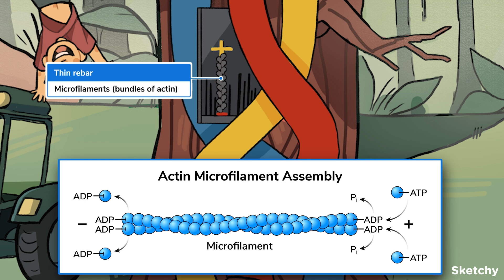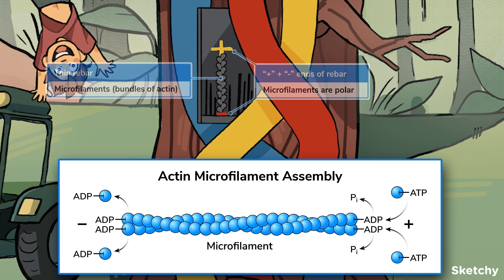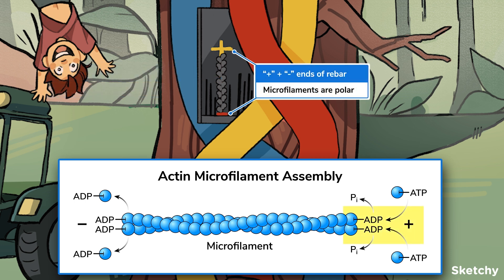Each end of a microfilament has a different structure, which we call microfilament polarity. One end is positive because the actin's positively charged polar side faces out. The other end is negative because actin's negatively charged side faces out, hence these positive and negative symbols on the rebar. The plus end typically assembles and disassembles faster than the minus end, which is useful to know because actin microfilaments can be transient or permanent structures.